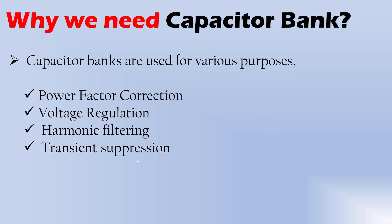Next, why do we need a capacitor bank? In the construction industry, capacitor banks are mostly used for power factor correction. Other purposes include voltage regulation, harmonic filtering, and transient suppression. But mostly in our construction industry, we use capacitor banks to improve our power factor — that is called power factor correction.